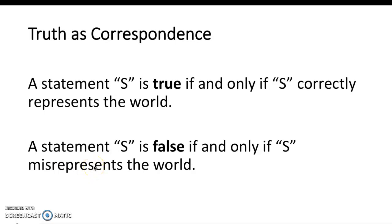In this course, we are going to be assuming what is known as the correspondence theory of truth. There are many theories of truth out there, but we're going to be assuming this one. I direct you to read the article 'Truth as Correspondence' and watch the video 'Pursuing the Truth.' The correspondence theory of truth maintains that any statement is going to be true under the conditions that the statement correctly or accurately represents the way the world is. If the statement does not accurately represent the way the world is, then the statement turns out to be false.